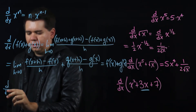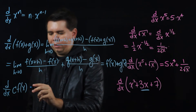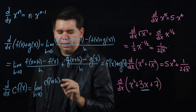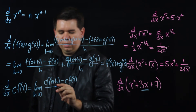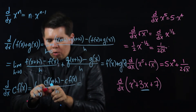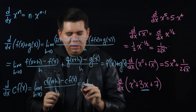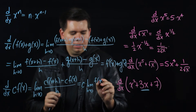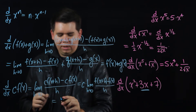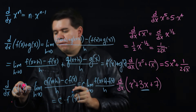Let's think about what happens when you have a constant in front of some function. Using our limit definition, that's just the limit as h goes to 0 of your constant times f(x+h) minus your constant times f(x), all over h. Since both terms on top have that constant c, we can pull the constant out using the limit law, giving us c times the limit as h goes to 0 of f(x+h) minus f(x) all over h — which is just c times the derivative of f.